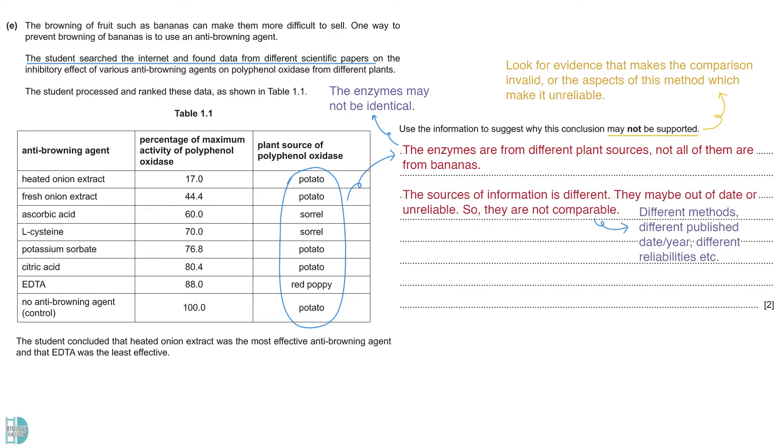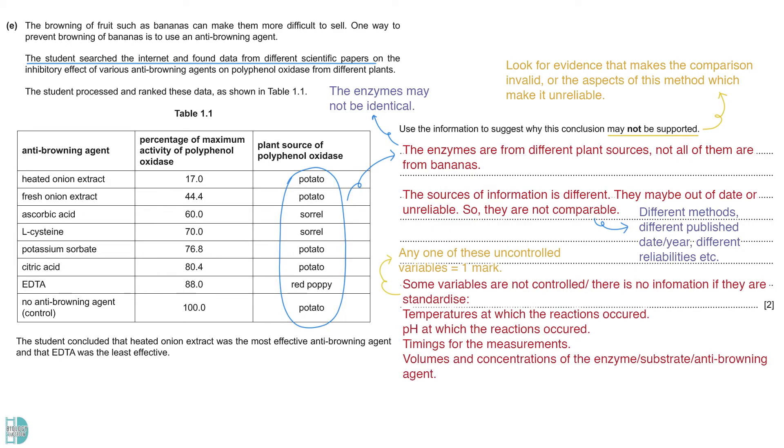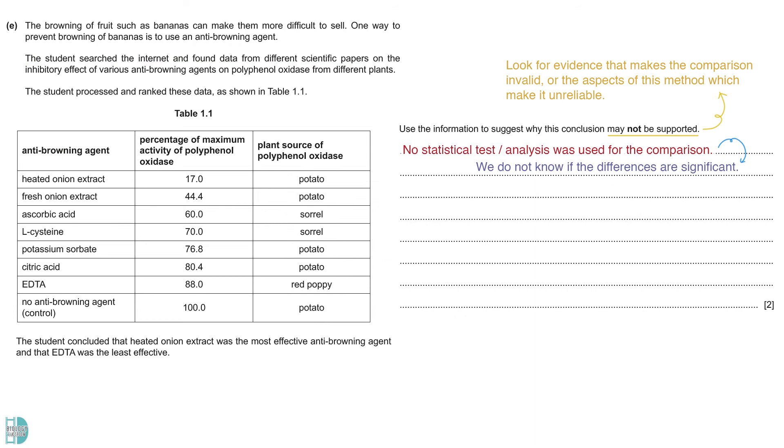The data are from different scientific papers. They are not obtained by the same scientists using the same method. So, we should not compare this data and conclude them. Besides, we do not know when each of the papers were published. They may be out of date. Without the source, we also do not know the reliability of the data. Next, there are some uncontrolled variables, or at least, we do not know if they were being standardized in these investigations. This includes temperatures and pH of the reaction that occurred, volume and concentrations of the enzyme, substrate, and the anti-browning agent used. Statistical tests and analysis should be used for the comparison to know if the differences are significant. The student concluded just by looking at the values without any statistically important comparison.